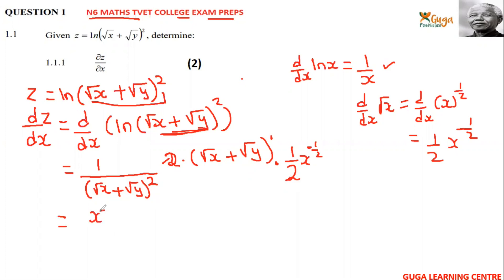So in all we'll be left with x^(-1/2) over (√x + √y)². Writing this in positive exponent, x^(-1/2) equals 1/√x. So you take it down, and that equals 1/√x.